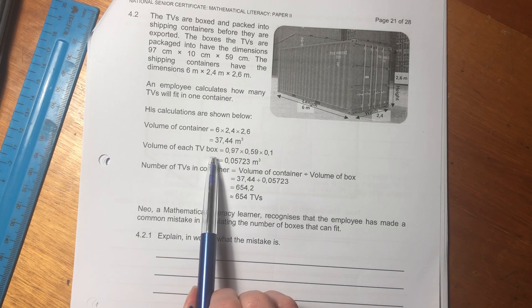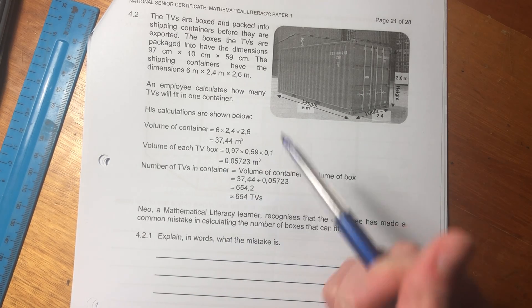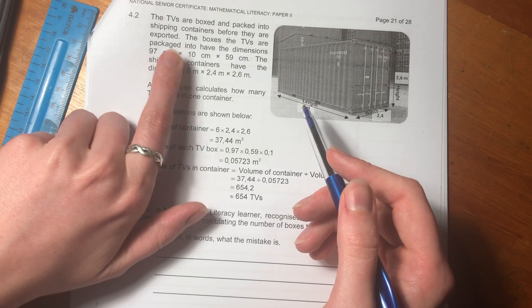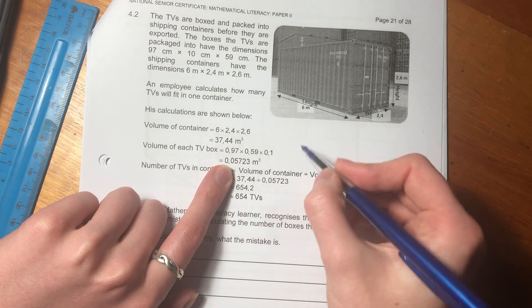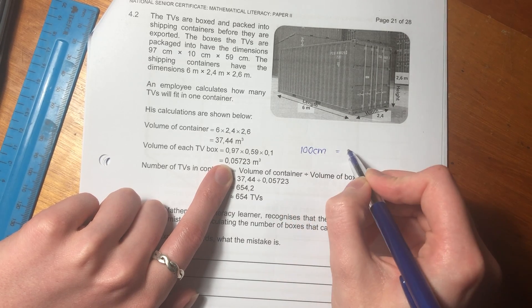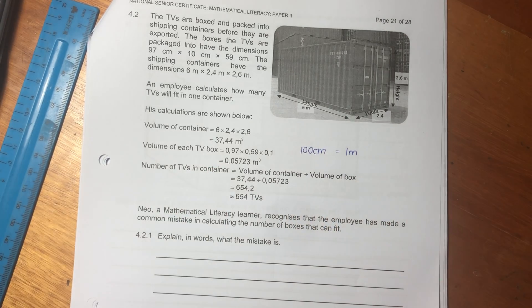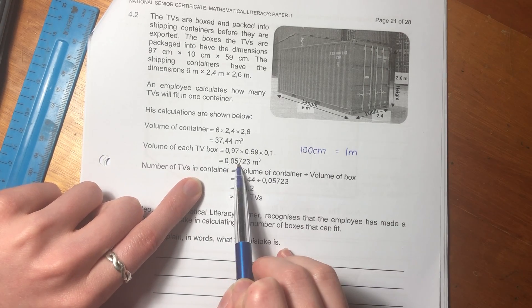Then it says the volume of the TV box. So they've converted each of these into meters. Do you see here, it's 97 cm, 10 cm, and 59 cm. So don't get confused. They've just basically said, well, we know that 100 cm equals 1 m. And that's why they've converted that there and worked out the volume.